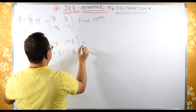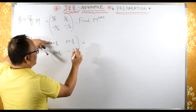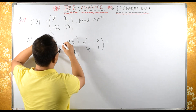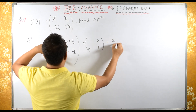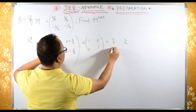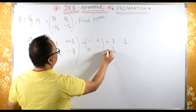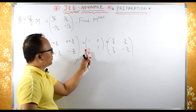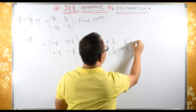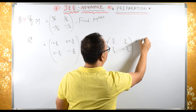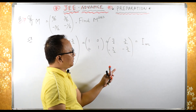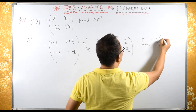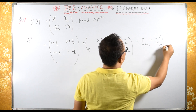This can be written as: all first terms give the identity matrix — 1, 0, 0, 1 — plus the 3/2 part. We have 3/2, 3/2, minus 3/2, minus 3/2. This is the identity matrix, so I can write this as identity of the form 2×2 matrix plus, taking 3/2 common, the matrix 1, 1, minus 1, minus 1.